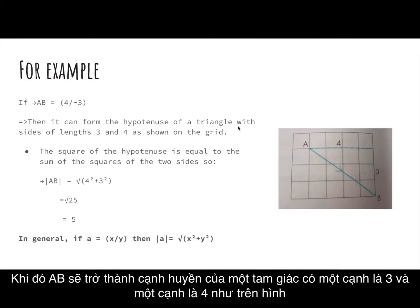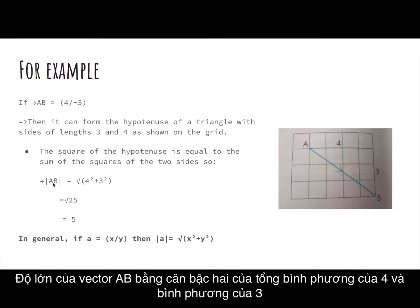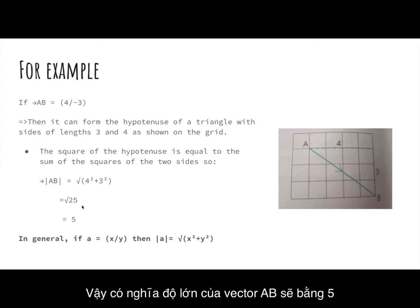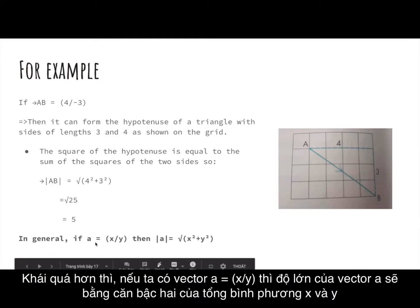It forms the hypotenuse of a triangle with sides of length 3 and 4. The square of the hypotenuse equals the sum of the squares of the two sides. So the magnitude |AB| equals the square root of 4² plus 3², which equals the square root of 25, which equals 5. In general, if vector a equals (x, y), then |a| equals the square root of x² plus y².